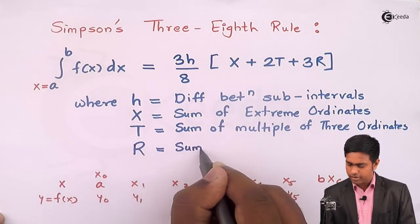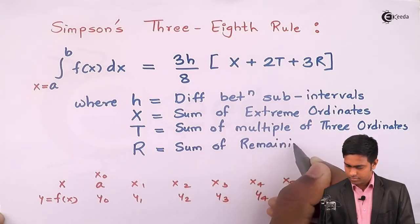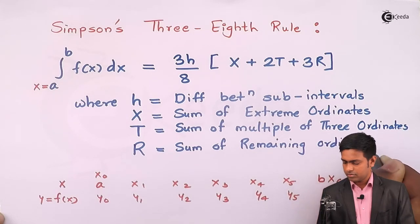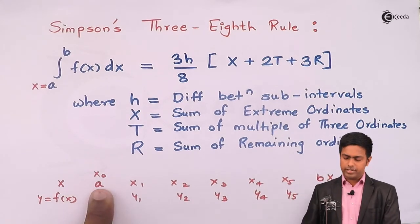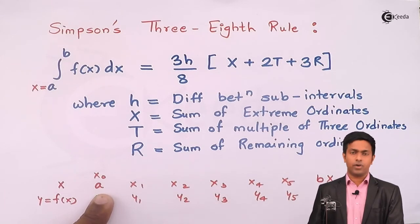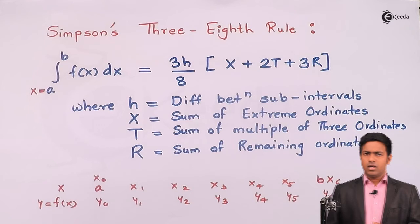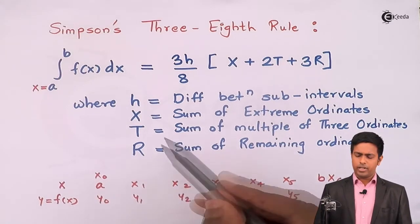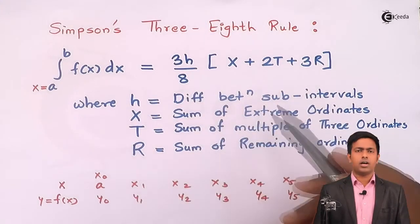And R is nothing but the sum of the remaining ordinates. So with X we removed the extreme ordinates, with T we removed the multiples-of-three ordinates, and whatever ordinates are left after that, we add them all and call it R. By putting the values of h, X, T, and R into the formula, we can get the value of the definite integration using Simpson's three-eighth rule.